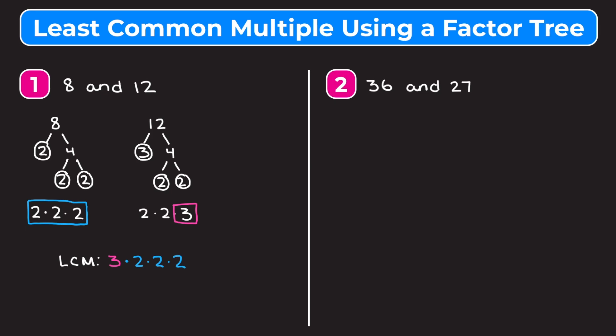So we multiply: 3 times 2 times 2 times 2. That gives us 3 × 2 = 6, times 2 = 12, times 2 = 24. So the least common multiple between 8 and 12 is 24.